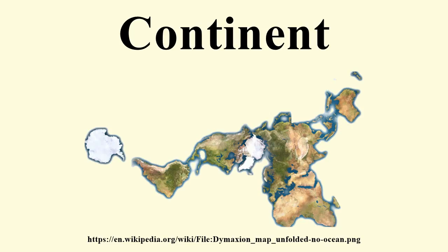At that time there were just three discrete continents: Afro-Eurasia, America, Antarctica, and Australia–New Guinea. There are numerous ways of distinguishing the continents. The seven-continent model is usually taught in the United States, China, India, the Philippines, parts of Western Europe, and most English-speaking countries, including Australia and England.